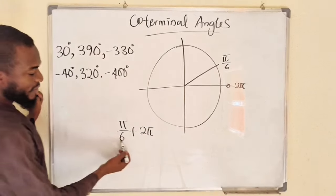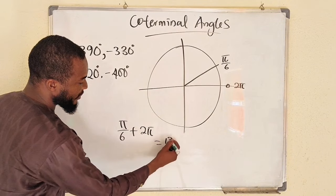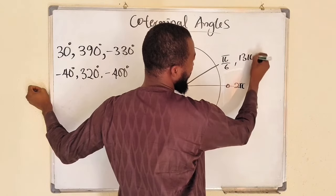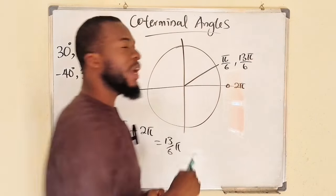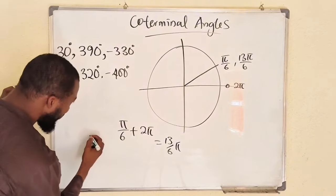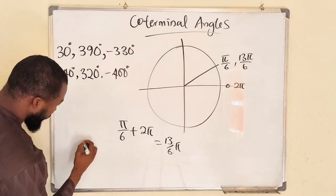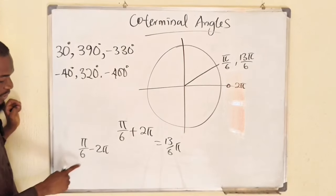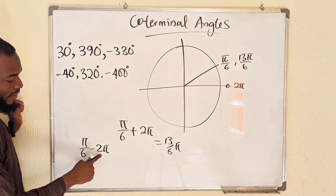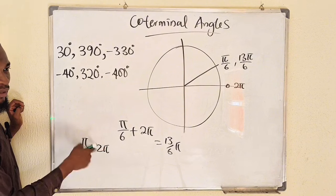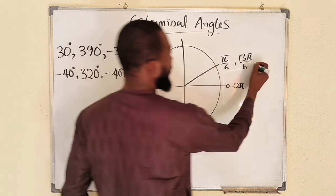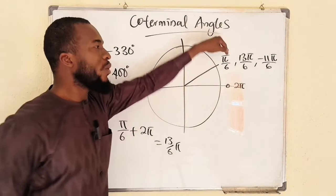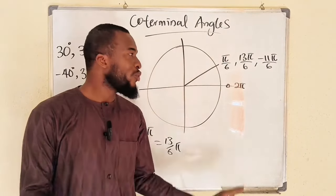Adding 2 pi to pi over 6: 6 times 2 is 12, plus 1 is 13, giving us 13 pi over 6. So 13 pi over 6 is another coterminal angle of pi over 6. If you decide to subtract: pi over 6 minus 2 pi gives 1 minus 12, which is negative 11, so this is negative 11 pi over 6. All three have the same ratios because they lie on the same position.